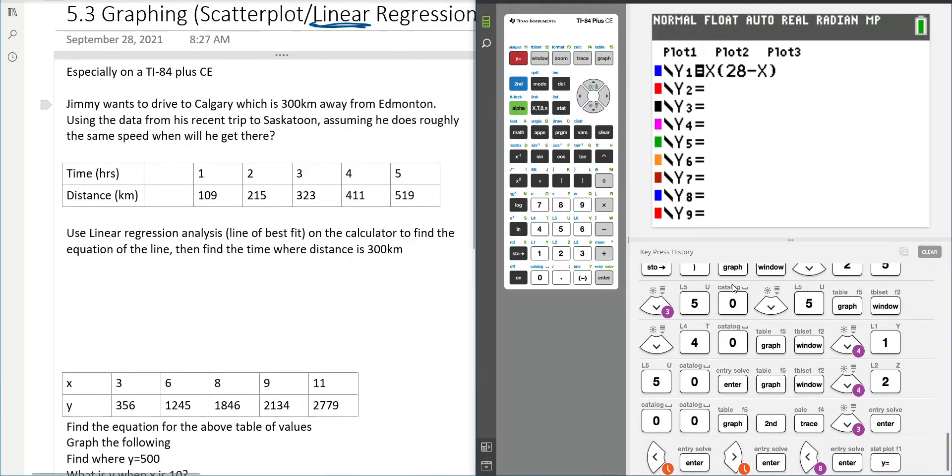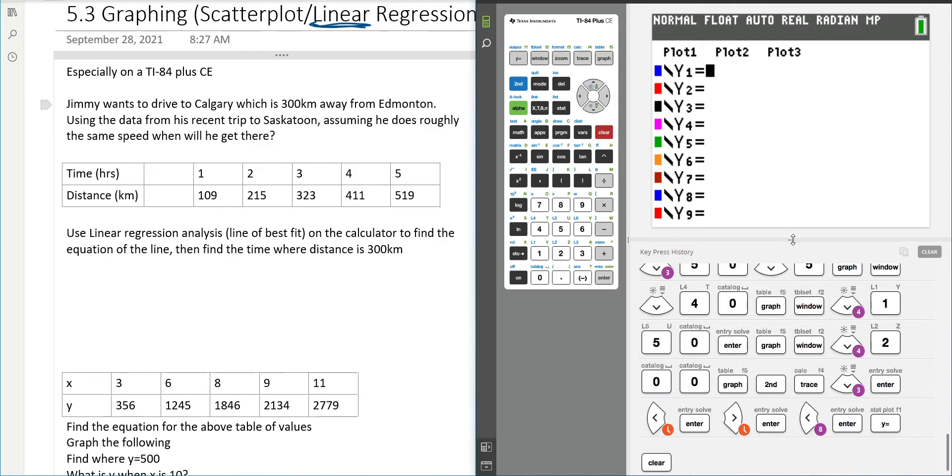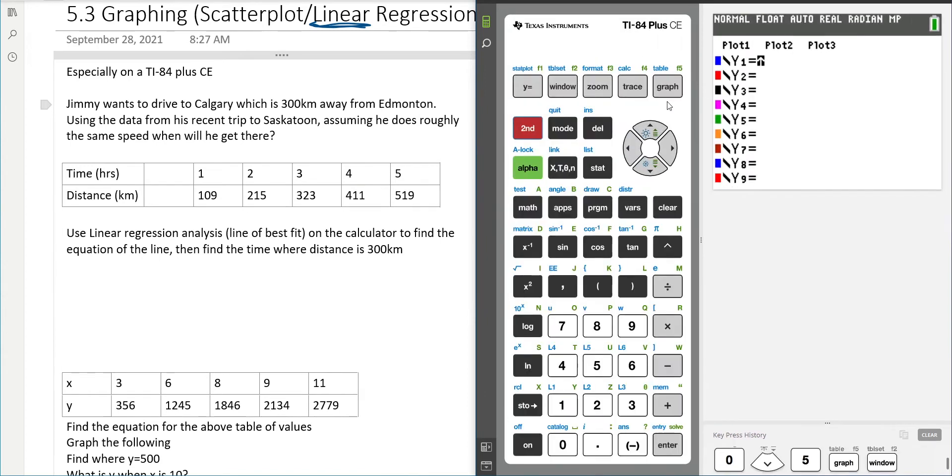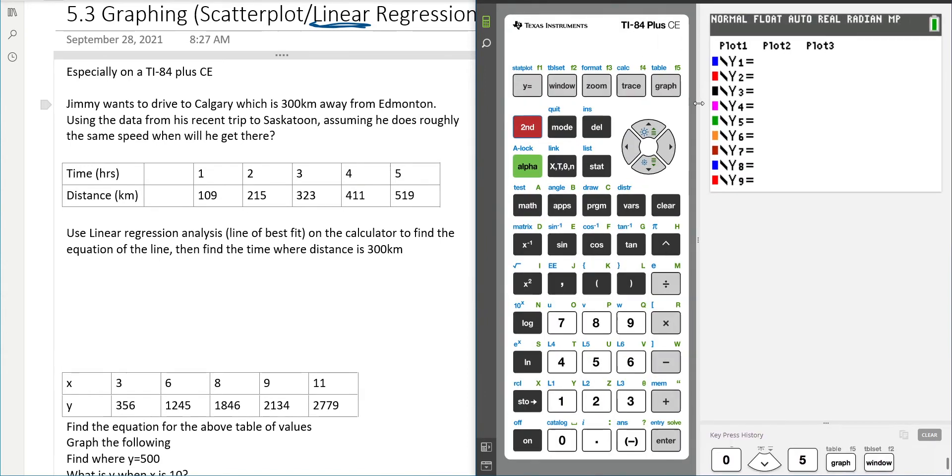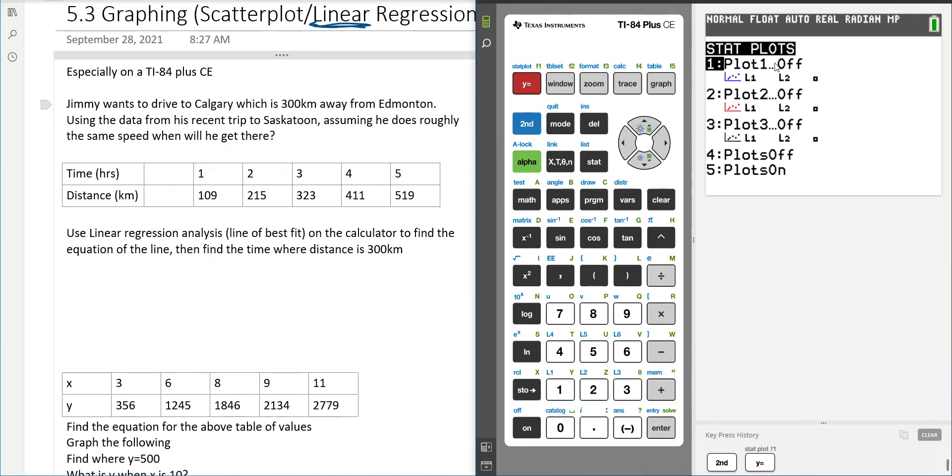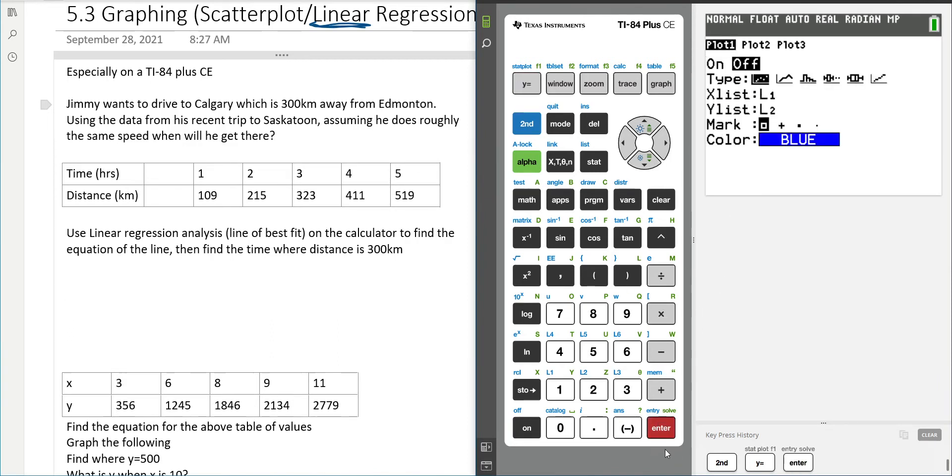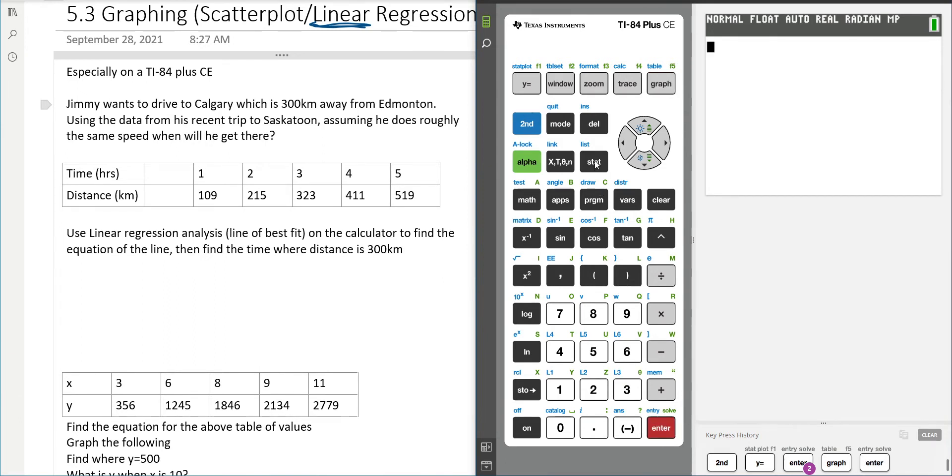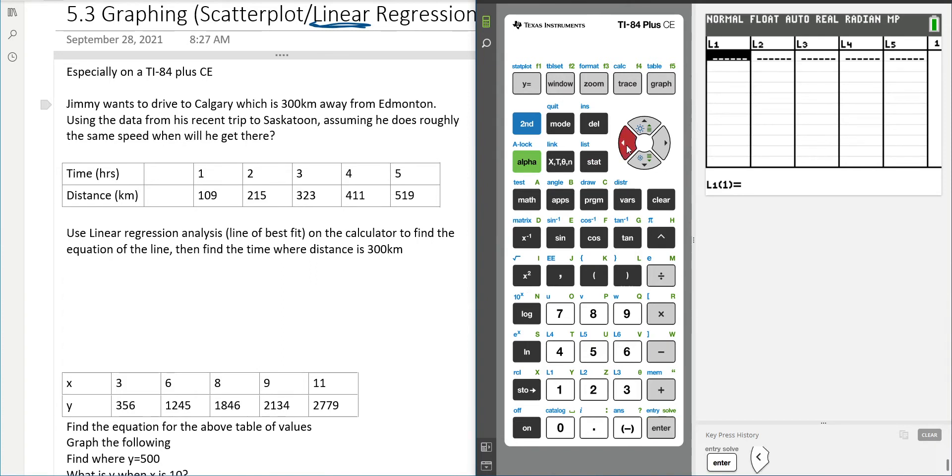Basically we need to plug this in to our function. So first of all, I'm going to clear all that. I don't really care about any of this. And I'm going to go to second function, stat plot. You see here in the corner it says stat plot. So I want to make my first plot on. So let's turn that on. And we want to go to stat, edit, and we're going to start filling in our lines.